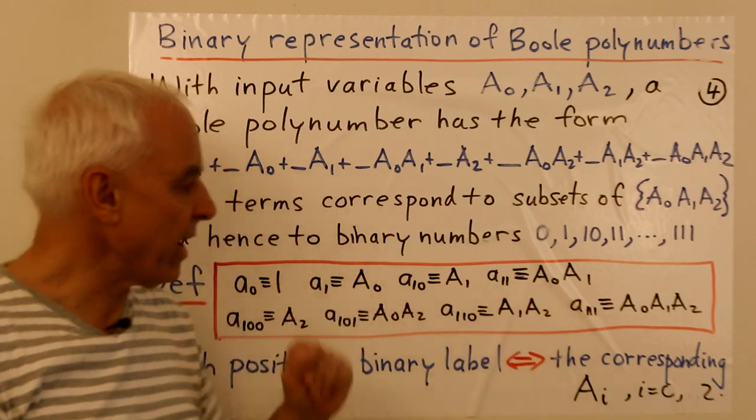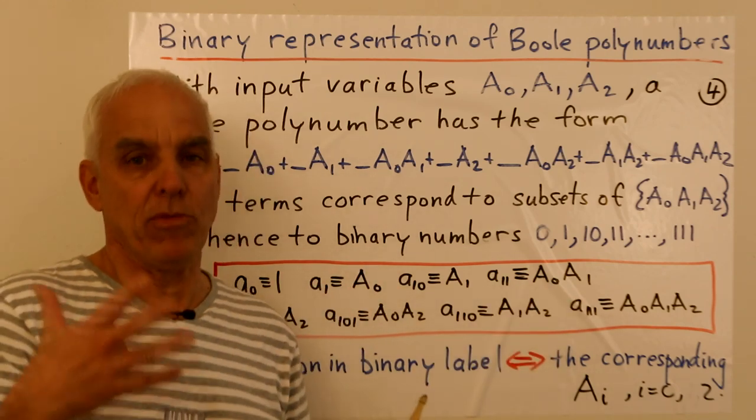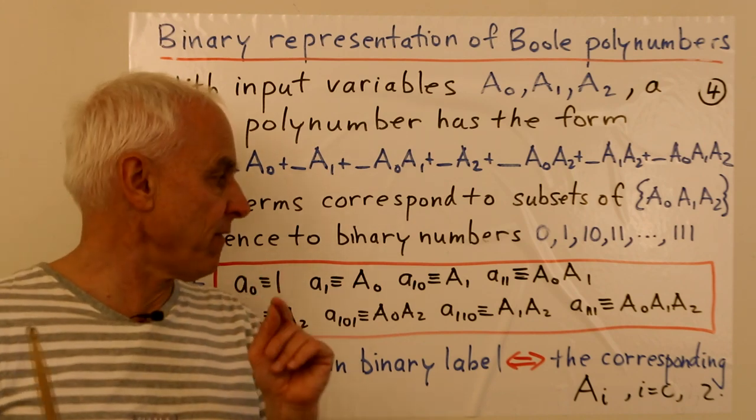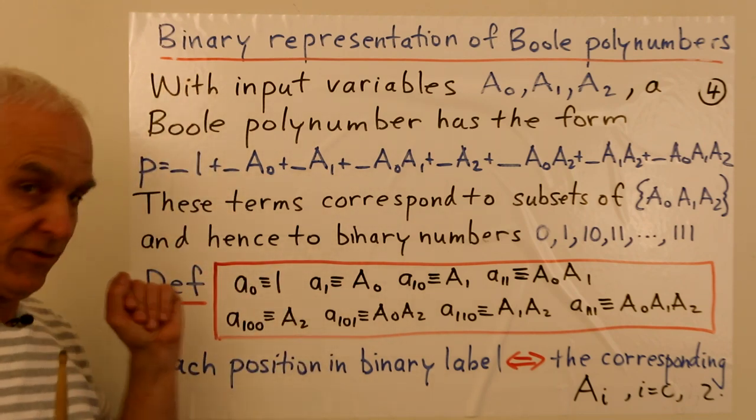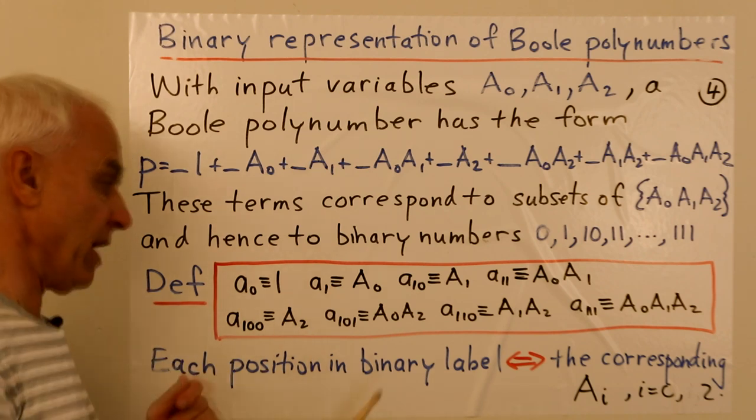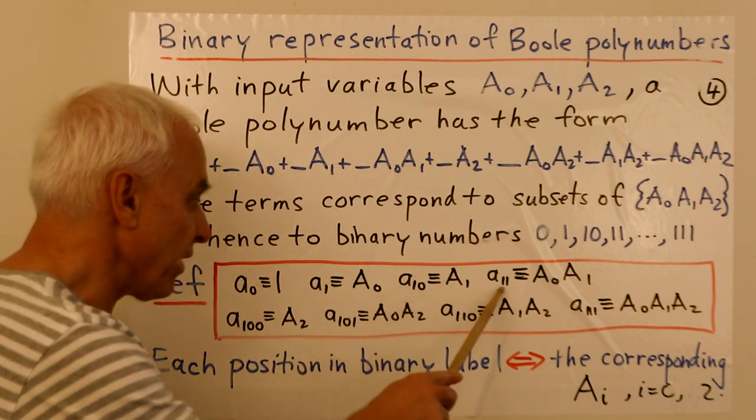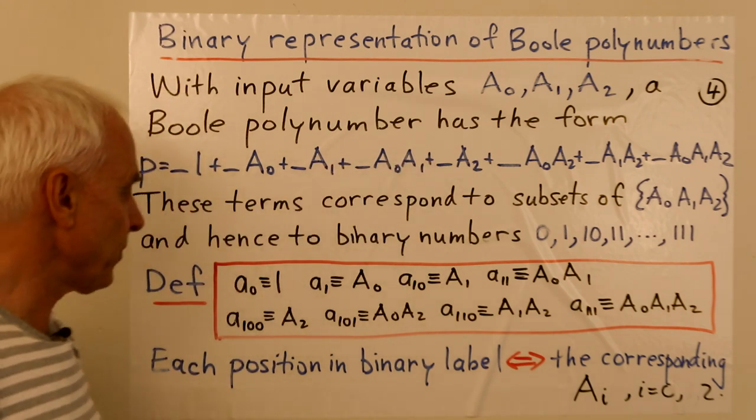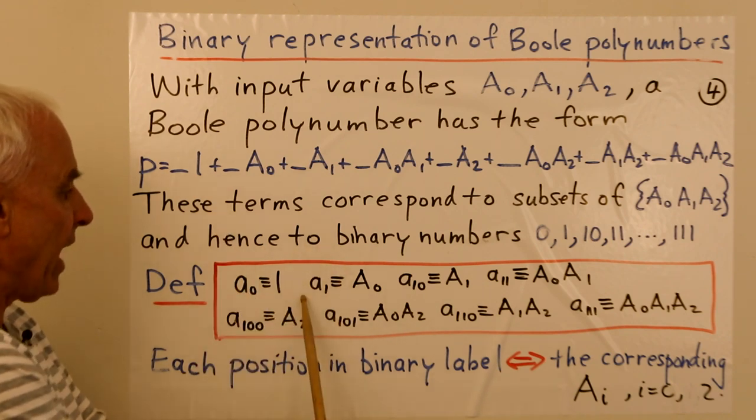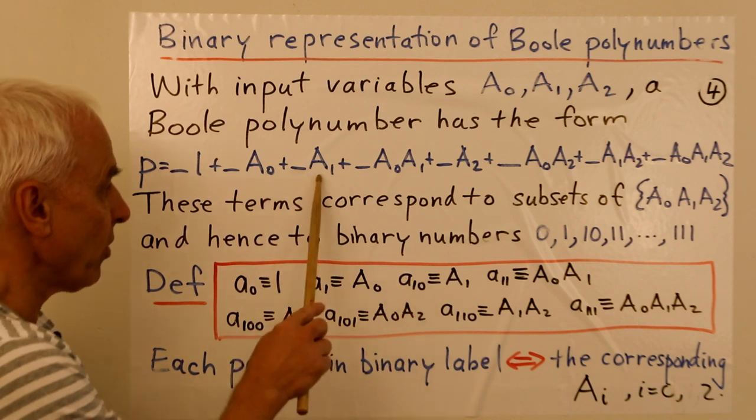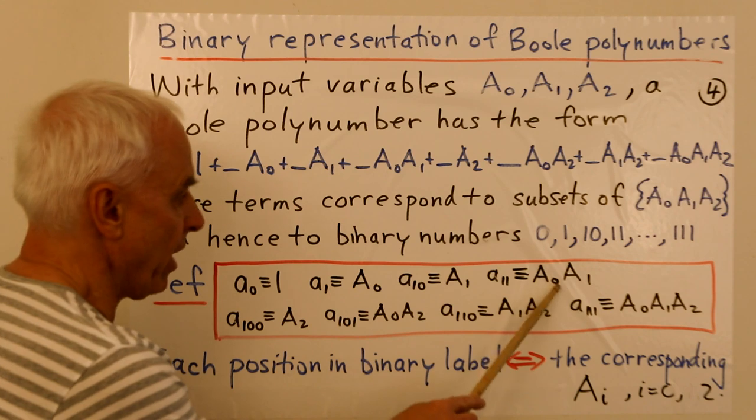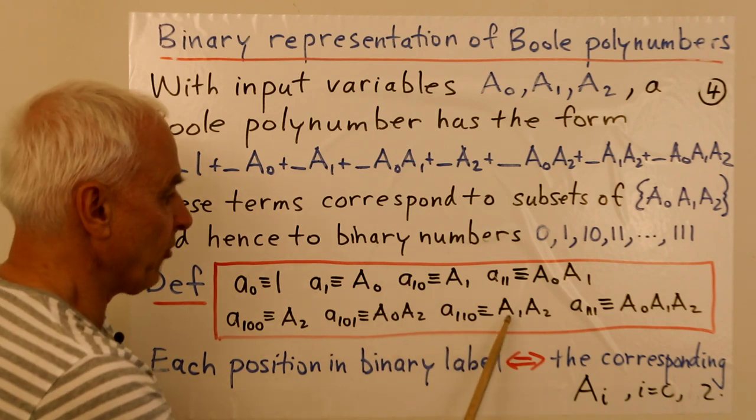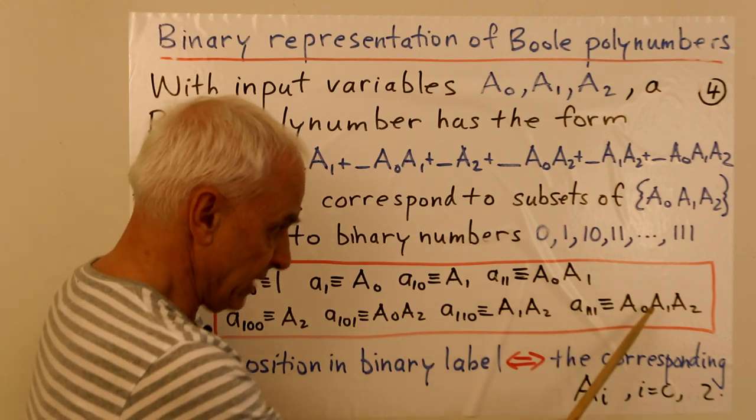So we're going to make that more clear by actually introducing new variables for these various terms. So we don't want to write these terms as a product of AIs now. We want to do something a little bit different. So I'm going to introduce the little a's, and they're going to be indexed exactly by the binary numbers from 0 to 7 in this case: a0, a1, a2, a3, a4, a5, a6, and a7. So here's how I do it. The a0 corresponds to this 1. a1 corresponds to A0. a10 corresponds to A1. a11 corresponds to A0 A1. a100 corresponds to A2. a101 corresponds to A0 A2. a110 corresponds to A1 A2. And a111 corresponds to A0 A1 A2.